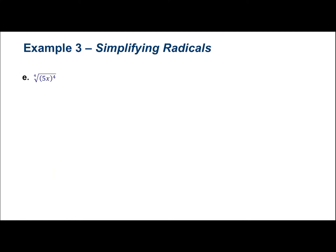The last simplifying radicals example uses rules from part one. Notice the 4th root of 5x to the 4th — since the index 4 and the exponent 4 are the same, they cancel each other out. The answer is just 5x. Pay attention to when exponents match the index; it makes your life a lot easier.